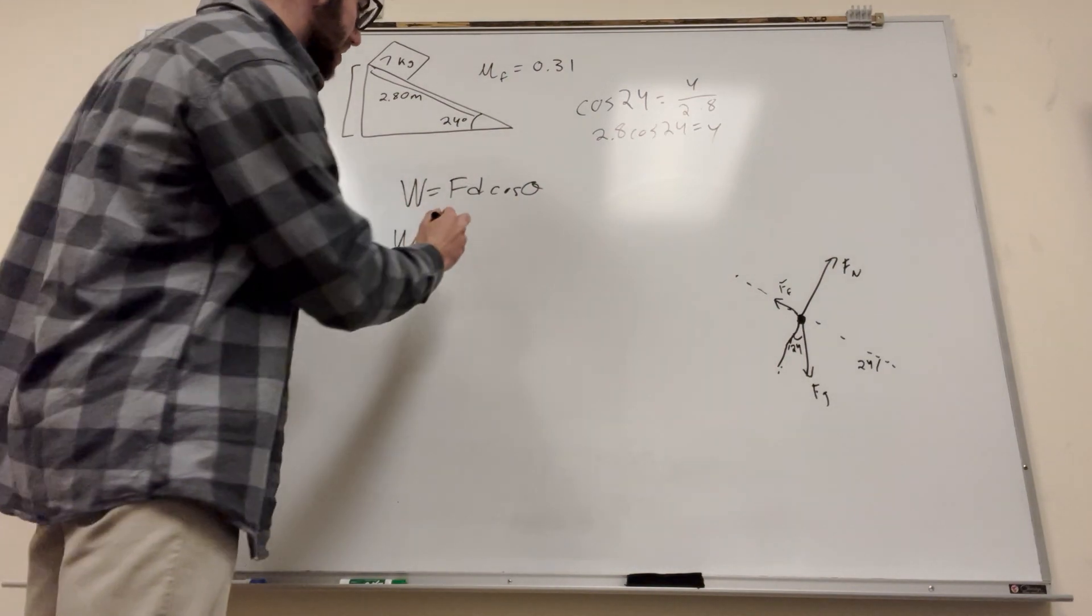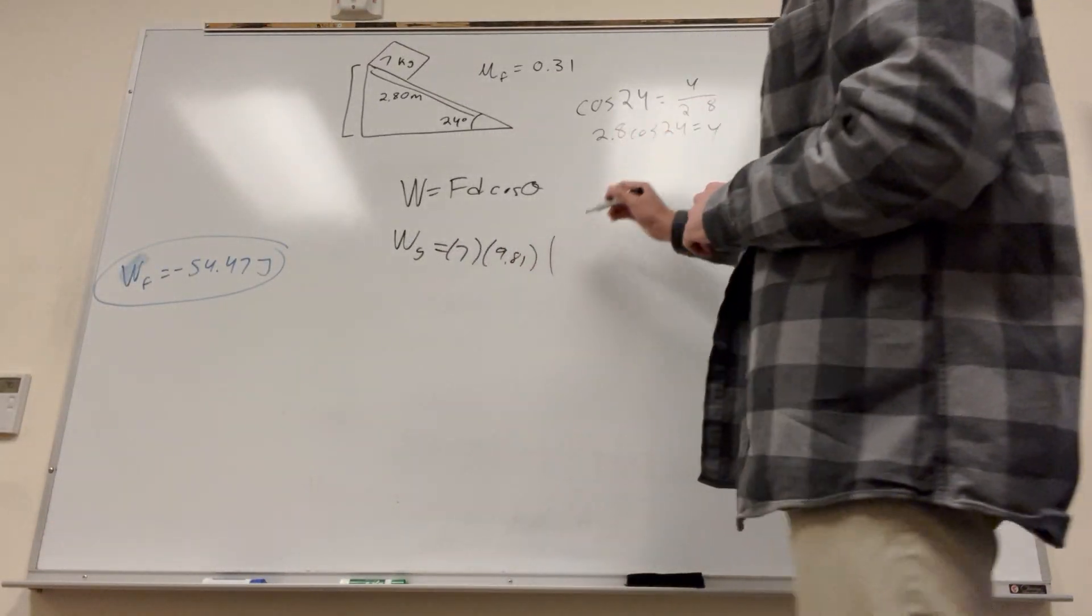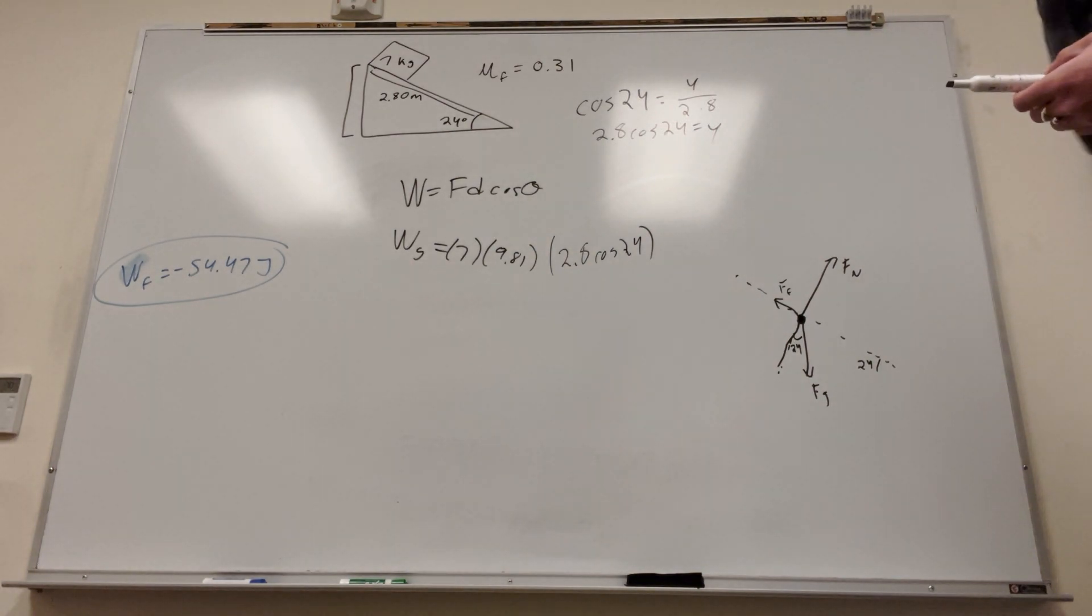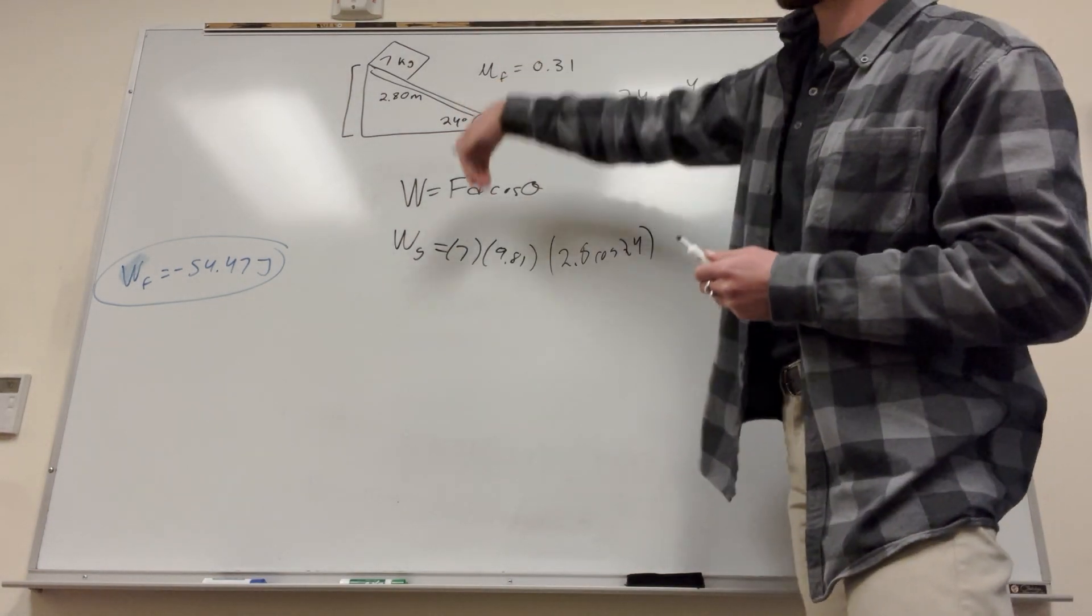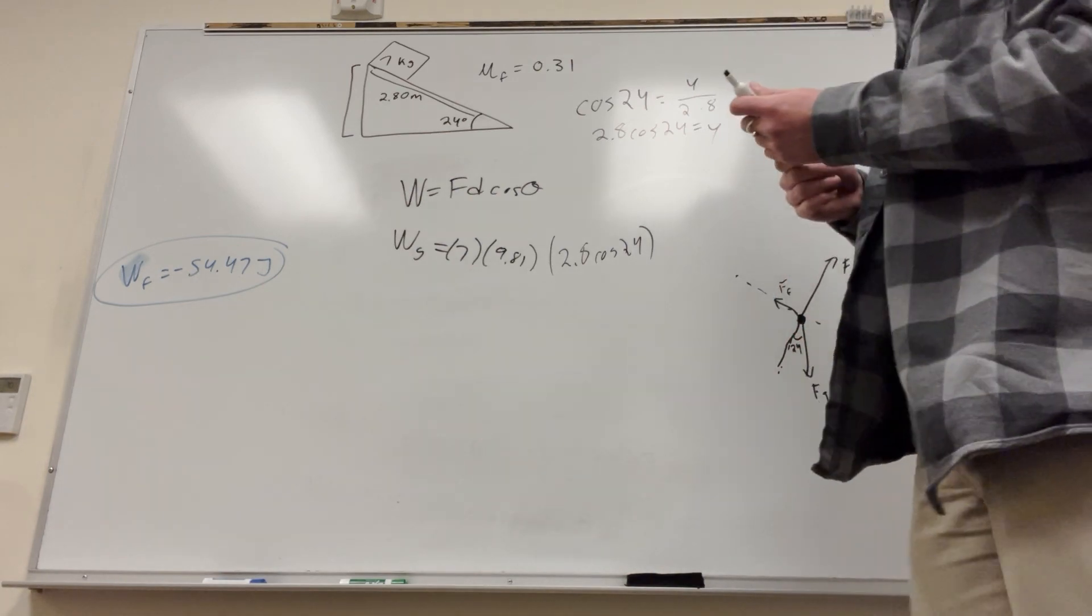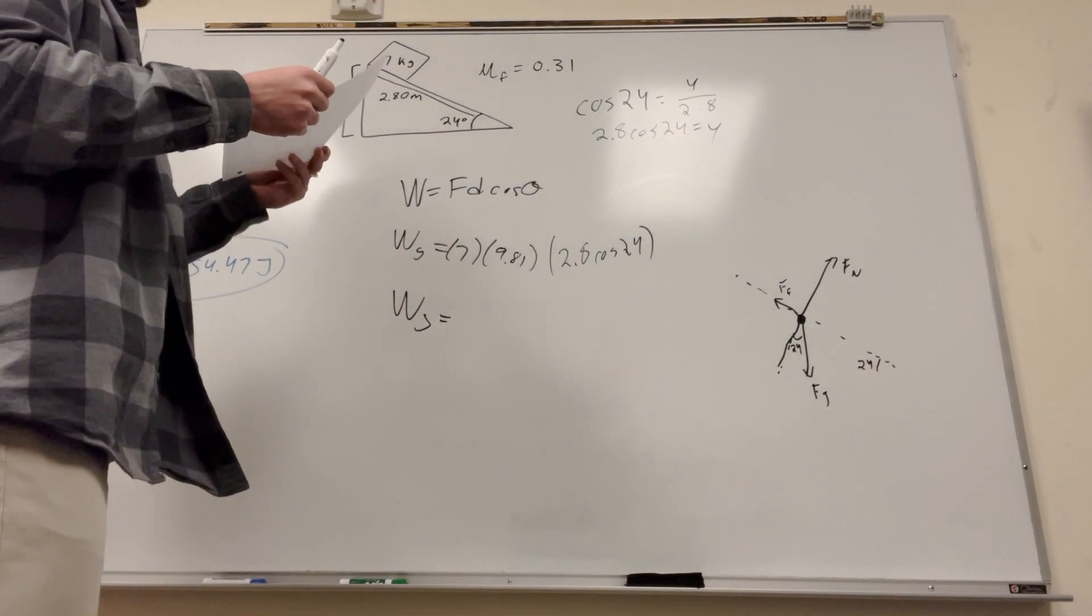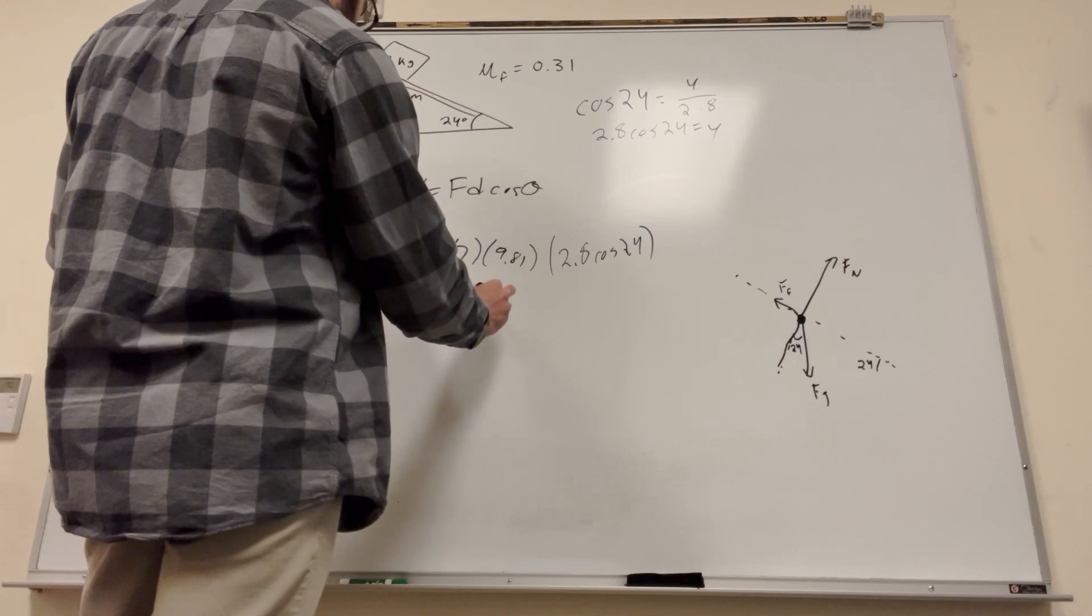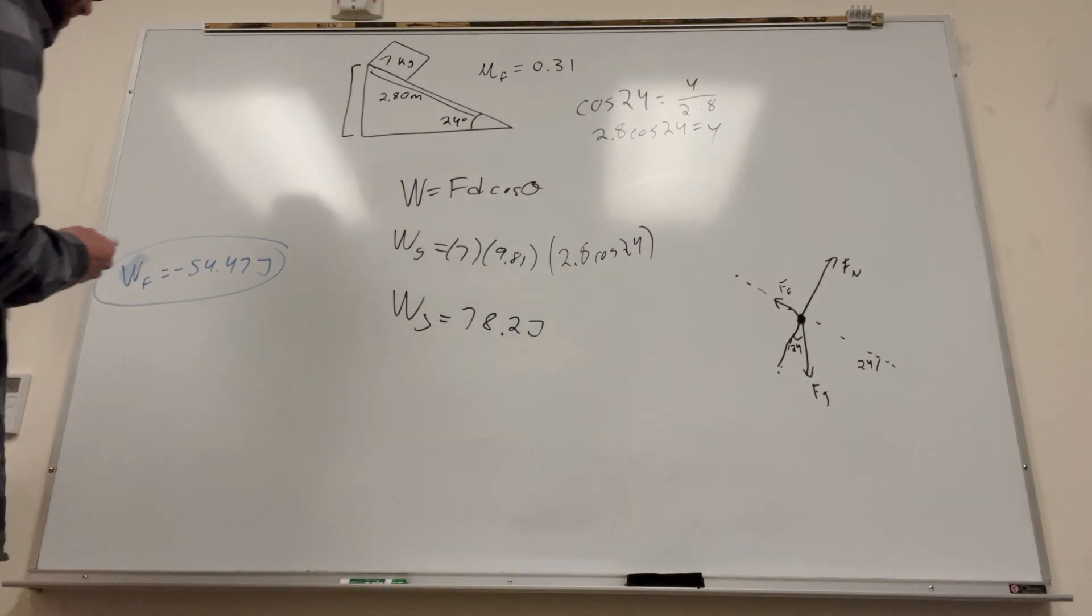So you can say that the work done by gravity is equal to the force of gravity. So that's mass times acceleration. So that's 7 times 9.81 times the distance, which is this, 2.8 cosine of 24, and then cosine of theta. Let's think about this. Well, gravity's going straight down. That's the way we're trying to see. And the acceleration is going down, so this is like the positive direction. So it's going to be a positive number, don't worry about the cosine in this case.